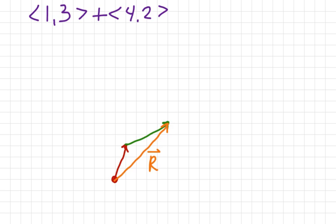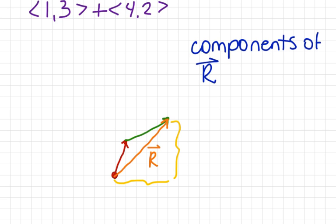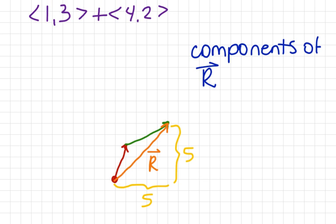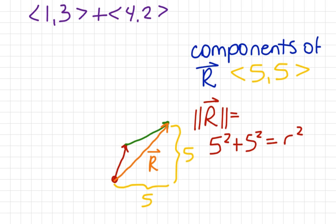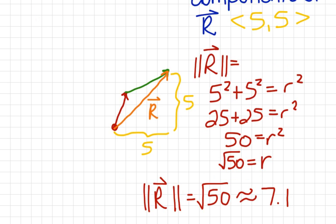After you've drawn your resultant vector, the rest of the triangle pieces don't matter — the vector is all we care about. To find the components of r, just count the orange resultant: over 5 and up 5, so vector r is (5, 5). To find the magnitude: 5 squared plus 5 squared equals r squared, giving 25 plus 25 equals 50. Taking the square root, r equals the square root of 50, which is approximately 7.1.